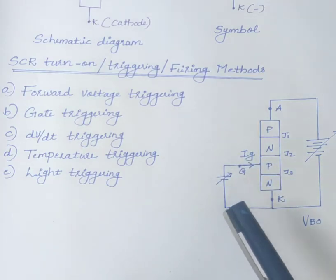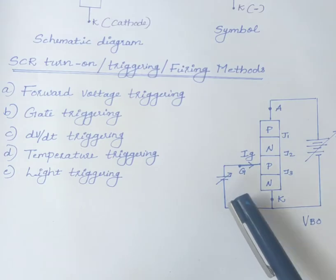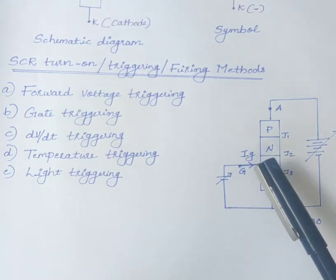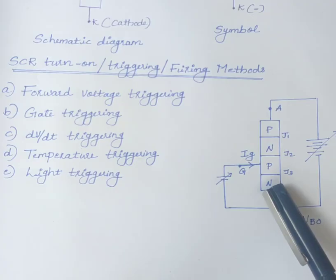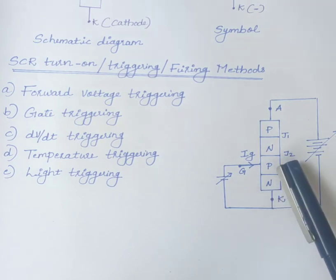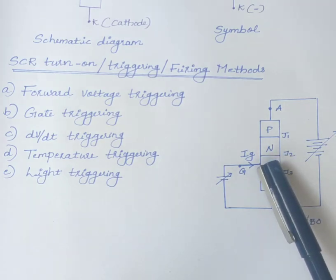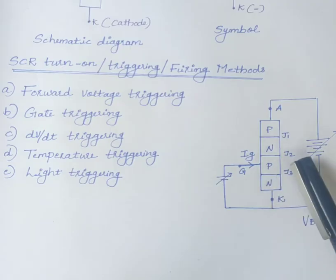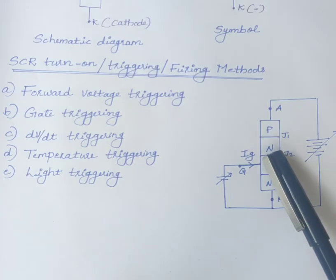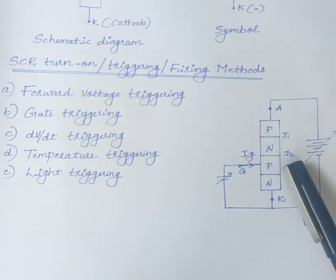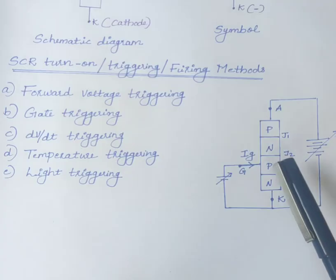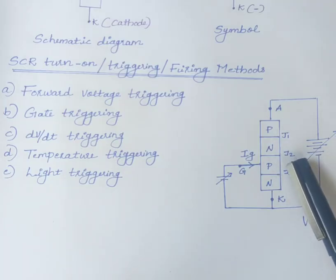When positive gate voltage is applied, gate P layer is flooded with the electrons from the cathode. This is because cathode N layer is heavily doped compared to P layer. Some of these electrons reach the junction J2. As a result, width of the depletion layer near the junction J2 is reduced.